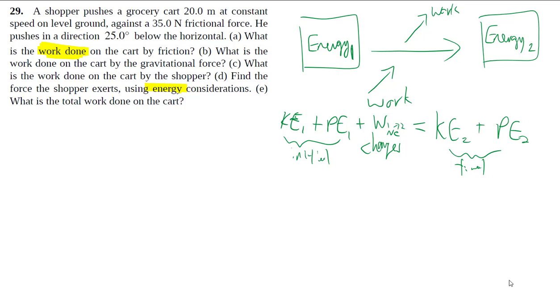So to facilitate all that, usually approaching these problems, we draw a before picture for situation one and after picture for situation two. So in this case, we have situation one, cart, and we know how fast it's going. And then situation two, you still have the same cart, but now it's gone through a displacement of 20 meters. And also it's constant speed, so V2 is equal to V1.